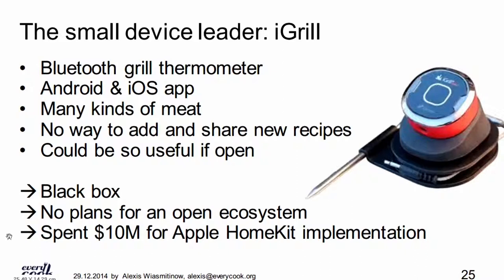Then from small devices we have iGrill — a grill thermometer and a very successful startup, probably more than five years on the market. This is the third generation of their Bluetooth thermometer. It's a great idea: you have a sirloin steak, put in the temperature sensor, say you want it medium rare, and the app calls you when it's time to take the steak off the heat. But I didn't find a way to add and share new kinds of meat or new recipes — it's limited to meat. The guys at the food hacking base with Frantisek could use it for fermentation and so many other things if it weren't limited to meat.